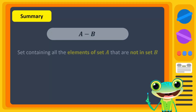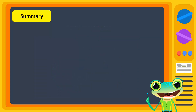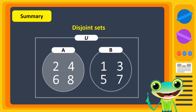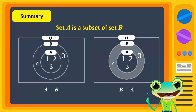In summary, A difference B is a set that contains all the elements of set A that are not in set B. When two sets are overlapping, we shade only the region of A outside B for A difference B. When two sets are disjoint, we shade the full circle of set A to represent A difference B. When A is a subset of B, we do not shade any region for A difference B, and B difference A is shown by shading the part of set B that lies outside set A.